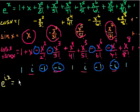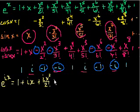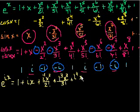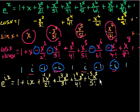So that will be 1 plus ix plus, well let me just write it, plus i squared x squared over 2 factorial, plus i to the third x to the third over 3 factorial, plus i to the fourth x to the fourth over 4 factorial, plus i to the fifth x to the fifth over 5 factorial. I don't have to keep going. Plus and it just keeps going.